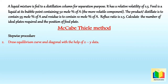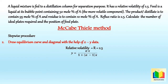The second step is to draw the equilibrium curve and diagonal using x-y data. In this example, equilibrium data is not given, but we have the relative volatility. So using the relation between y and x in terms of relative volatility, we can calculate x-y data. The relation is: y = (α·x) / (1 + (α−1)·x), where α = 2.5.